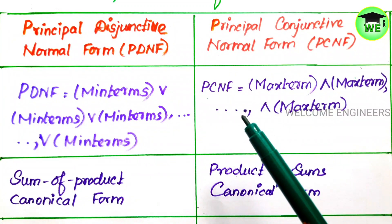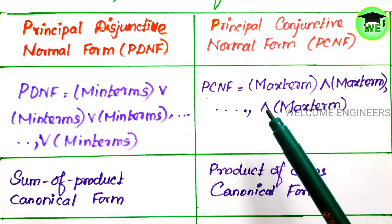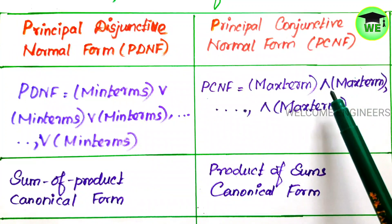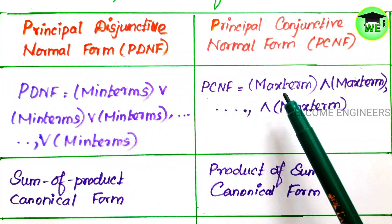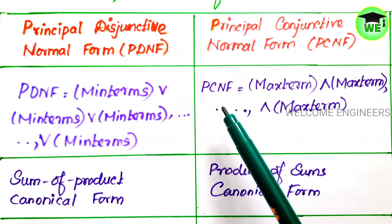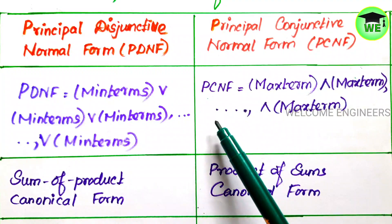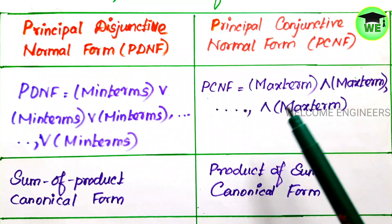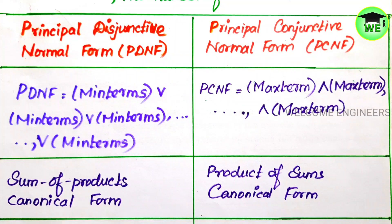In PCNF, for a given statement formula, an equivalent formula consisting of the conjunction of max terms is known as its Principal Conjunctive Normal Form. Conjunction means the AND symbol; max terms use the OR symbol between variables. So the PCNF form looks like: max term AND max term AND max term, and so on.